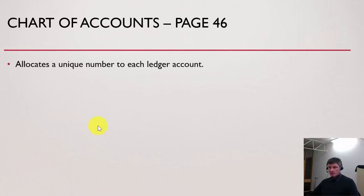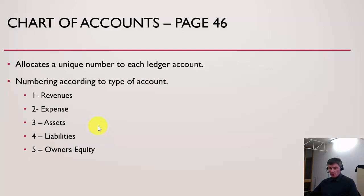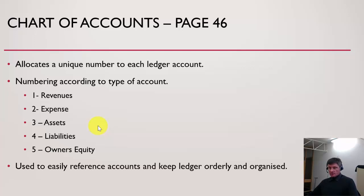Chart of Accounts allocates a unique number to each ledger account in your general ledger. We normally use a numbering system — for example, all revenues start with one thousand, expenses with two hundred or two thousand, whatever you choose. They are there to easily reference accounts in the future and also to keep our ledger orderly and organised.